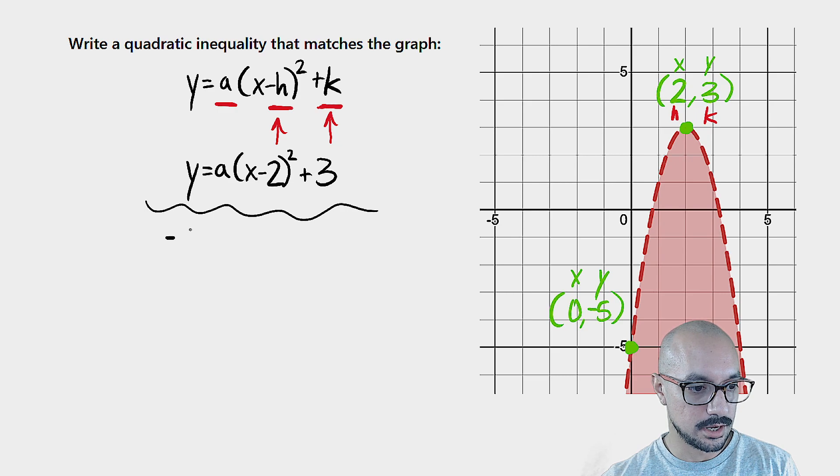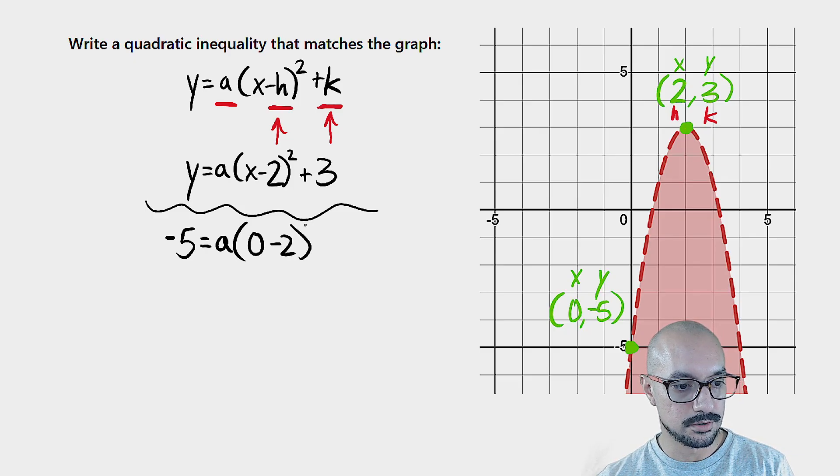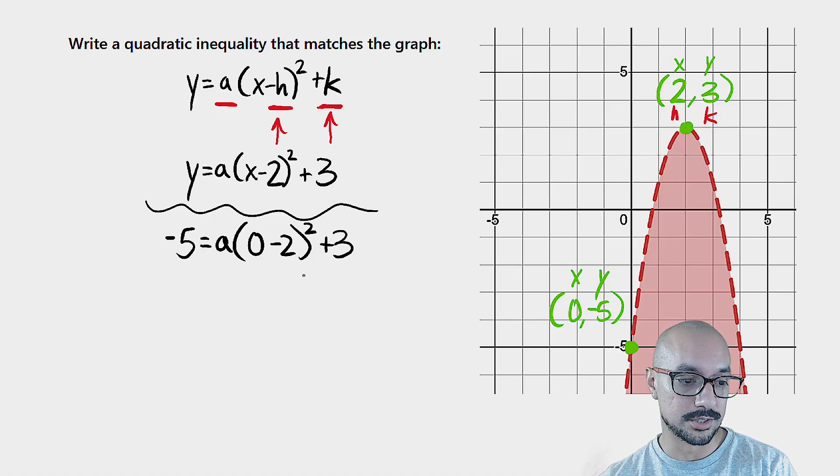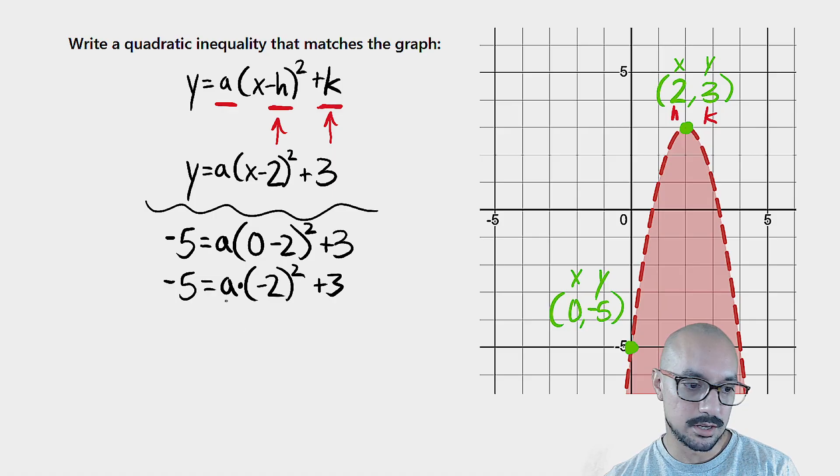So we get negative five equals a times the quantity zero minus two squared plus three. Now we have a solvable equation solvable for a. Let me go ahead and solve it. Negative five equals a times the quantity negative two squared plus three. There's multiplication right in here.